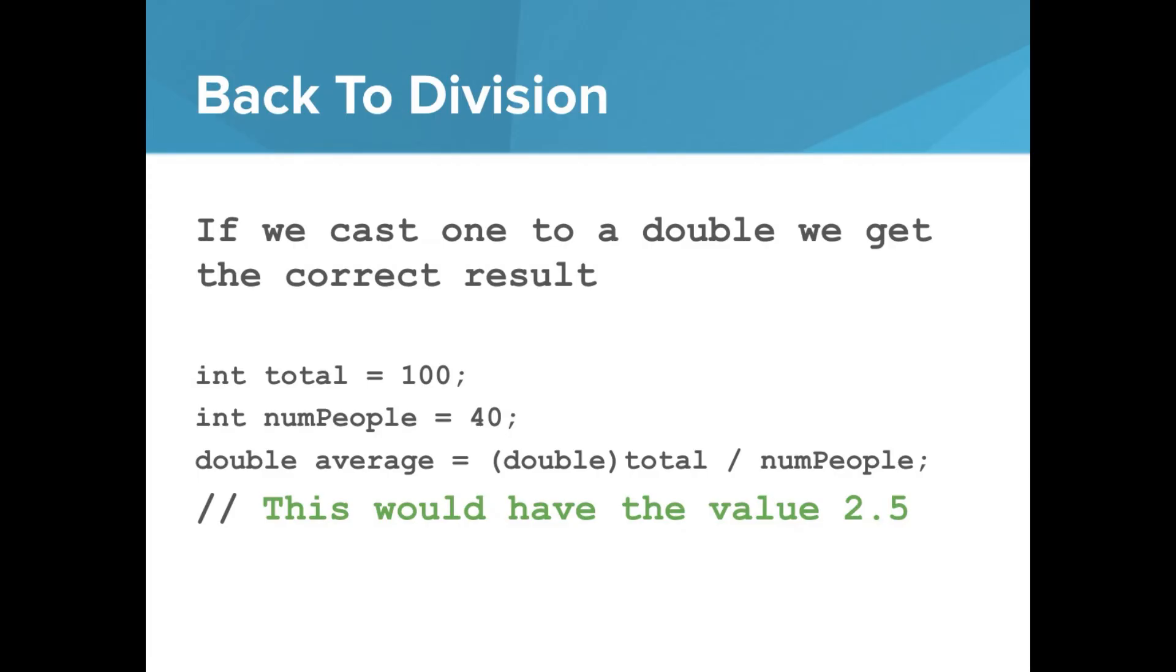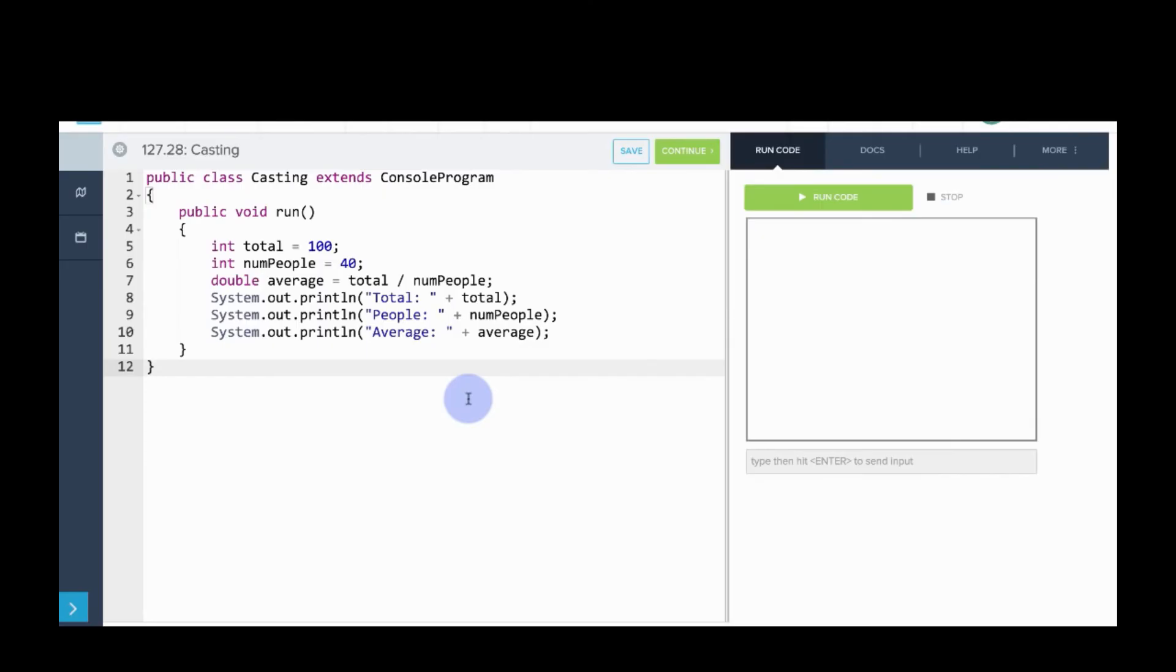So let's go into our editor and look more at this problem. Okay, so here we have that code: int total is equal to 100, int numPeople is equal to 40, double average equals total divided by numPeople. So let's print this out and see what happens.